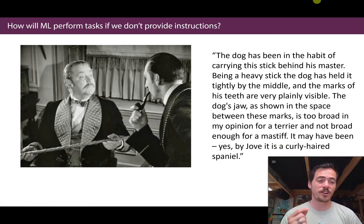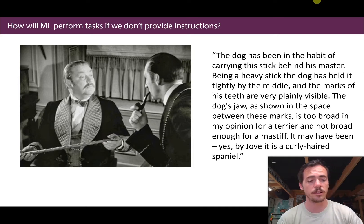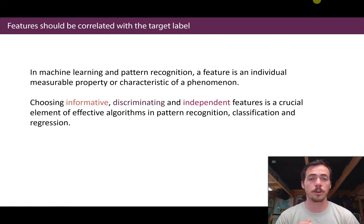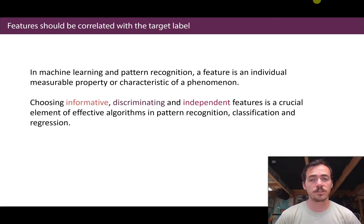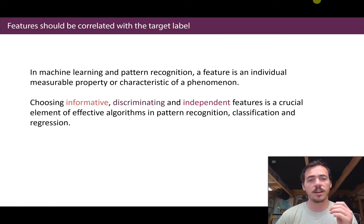Just like Sherlock Holmes can look at clues to infer something about the case he's working on, machine learning algorithms — if they don't have the target but they're trying to predict it — use clues that are hopefully correlated with the target to make predictions. According to the Wikipedia definition, in machine learning and pattern recognition, a feature is an individual measurable property or characteristic of a phenomenon. Choosing informative, discriminating, and independent features is a crucial element of effective algorithms. Informative means it tells you something about what you're interested in. Discriminating means it can be used to separate your data. And independent means we don't want features that all provide the same information.